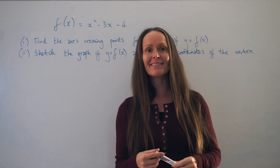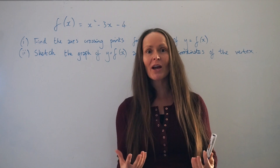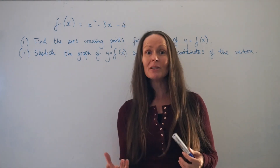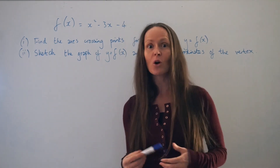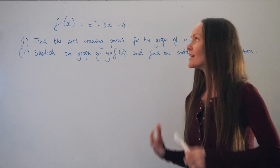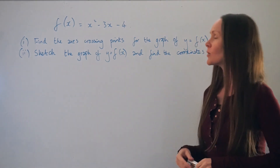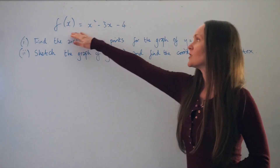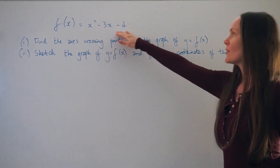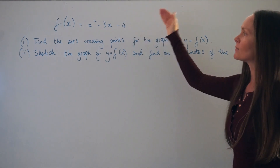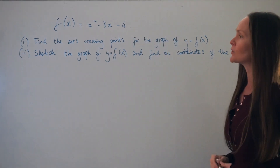In this lesson I'm going to show you how to find the maximum and minimum values of a quadratic function. The quadratic function we're going to use is f(x) = x² - 3x - 4.